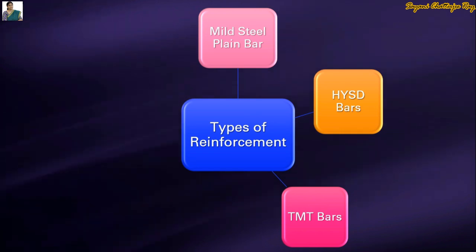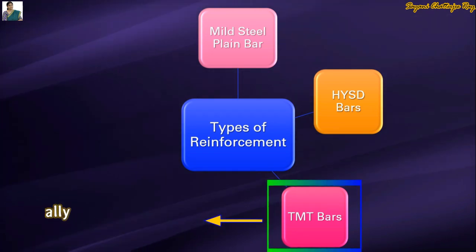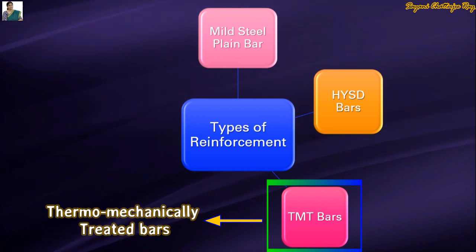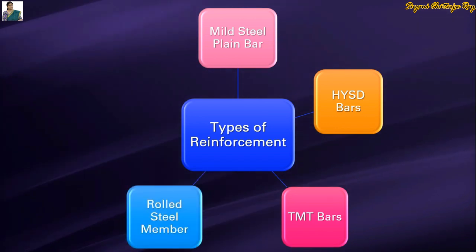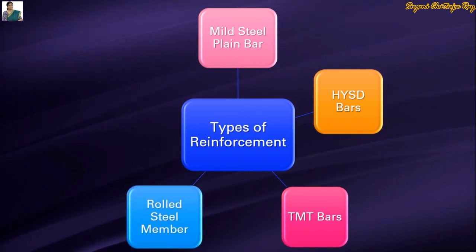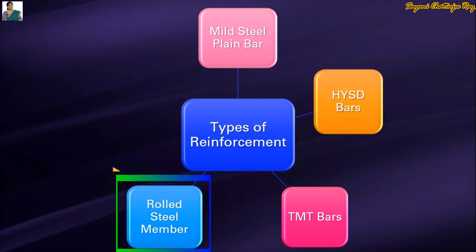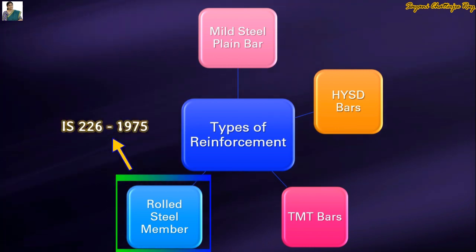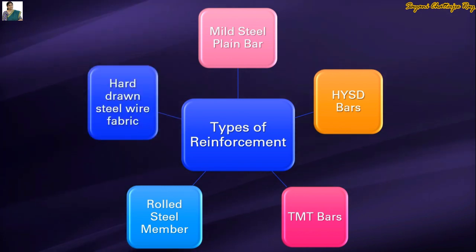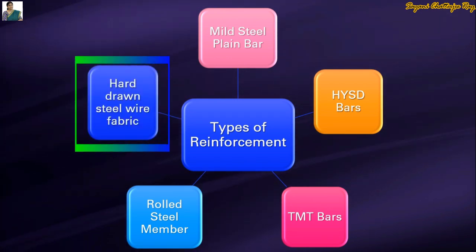The third type of reinforcement is TMT bars. TMT stands for Thermo Mechanically Treated bars. The fourth type of steel reinforcement is rolled steel members, and the corresponding IS code is IS 226:1975. The last type is hard drawn steel wire fabric, and the corresponding IS code is IS 1566:1967.